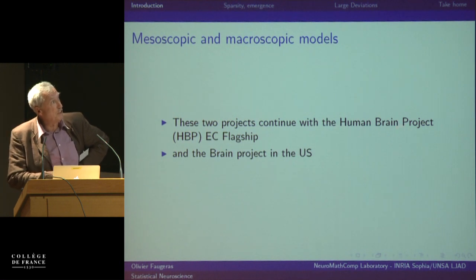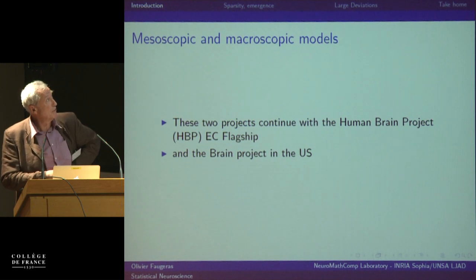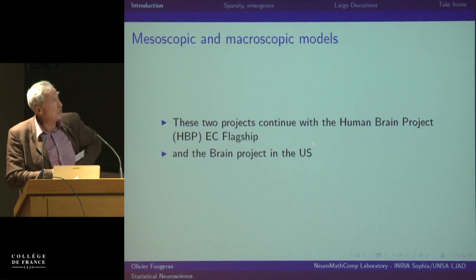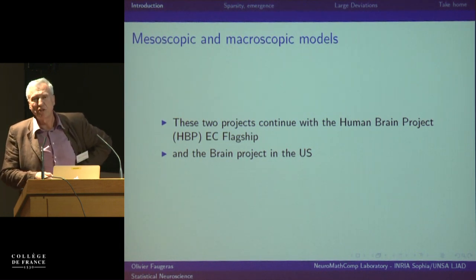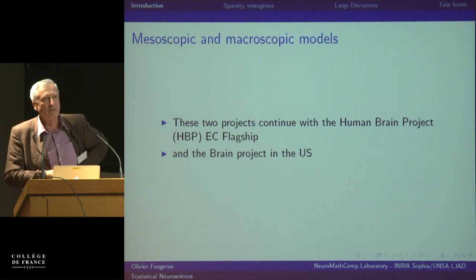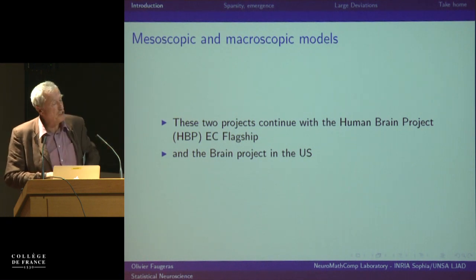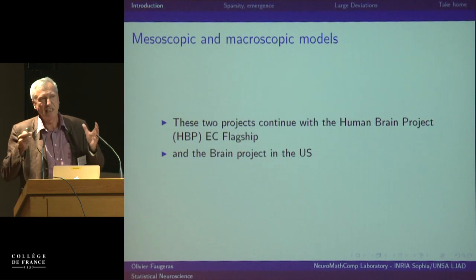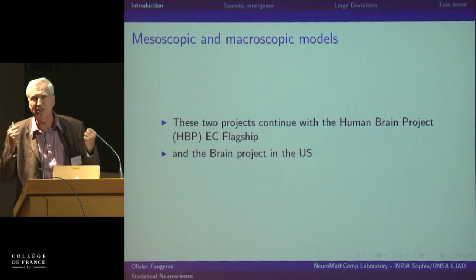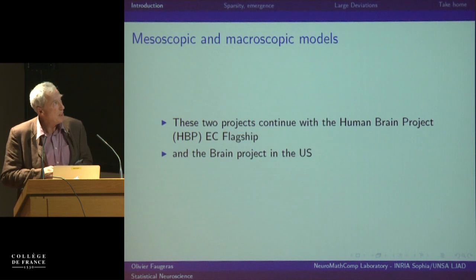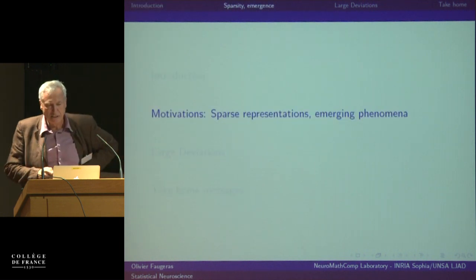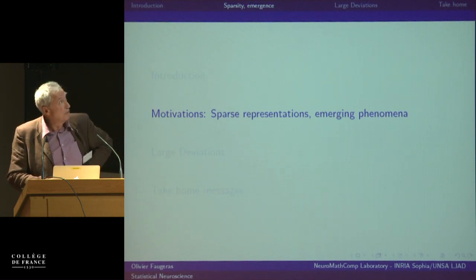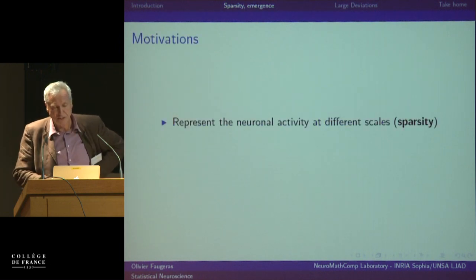These two projects continue with the Human Brain Project in Europe — an EC flagship based at EPFL in Lausanne — and the BRAIN Project in the United States. One reason to develop hierarchical descriptions of populations of neurons is that if you simulate at a very fine level of detail the activity of millions of neurons, you cannot simulate the whole brain immediately. You need to interface that particular module with coarser-grained models. These are important motivations for developing statistical neuroscience.